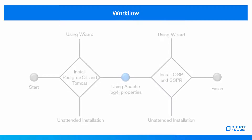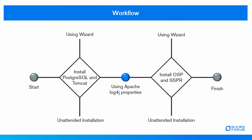This is the workflow to install OSP and SSPR components. Step 1: Install PostgreSQL and Tomcat. You can install them using the wizard or perform a silent installation. Step 2 is an optional step — execute this step only if you want to record the events in Tomcat using the Apache Log4J service.